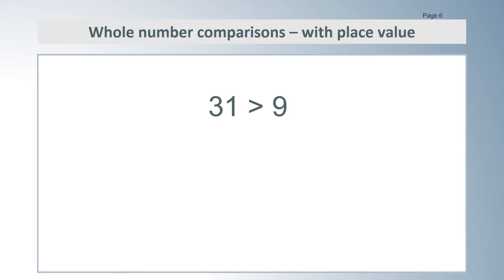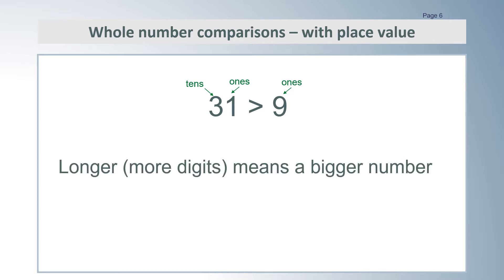31 is greater than 9. 31 has 2 digits, the 3 and the 1, so we know straight off that 31 is greater than 9. Because we are used to our place value numbering system, we assume that the more digits a number has, the larger it is. This is a useful rule of thumb for seeing how big a whole number is.